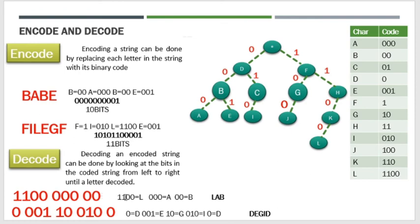Sabihin nating 1-1-0-0 — ano ba yun sa tree ninyo? Titignan ninyo: 1-1-0-0 ay letter L. Tapos meron tayong 0-0-0 — letter A. Meron ding 0-0 sa problem — yung 0-0-0-0 ay letter B pala. Kaya ang mabubuo mong salita dyan ay 'LOVE'.